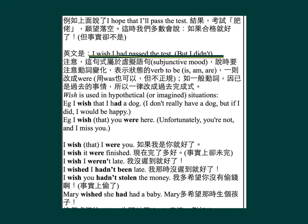注意这个句式属于虚拟语句，即是subjunctive mood，讲的时候要注意动词的变化。表示状态的verb to be，即是is、am、are，要改成were（用was都可以，但是不是很正规）。如果一般动词，因为已经是过去的事情，所以一律都要改成是过去完成式。